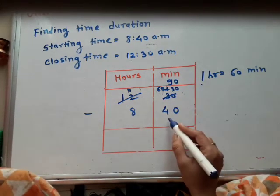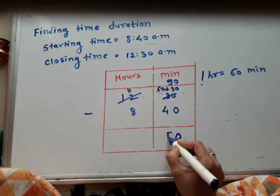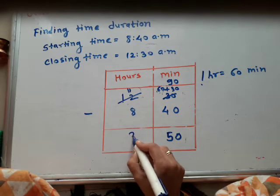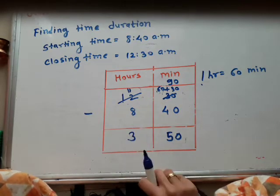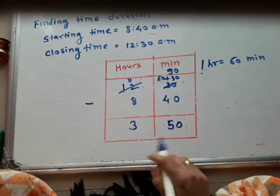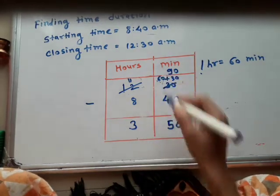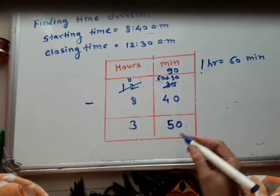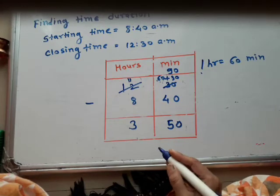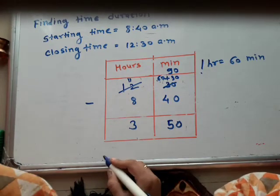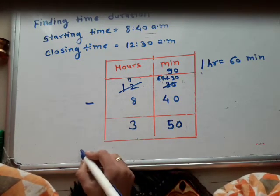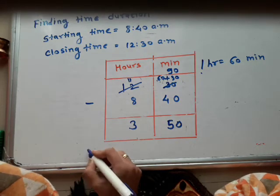9 minus 4, we get 5. So 90 minus 40 gives us 50 minutes. And this 11 minus 8, we get 3. So the time duration of this school is 3 hours 50 minutes.